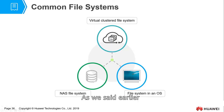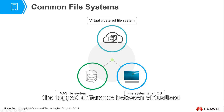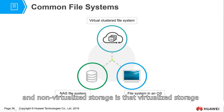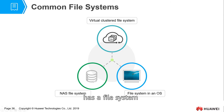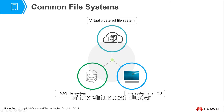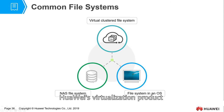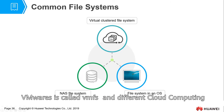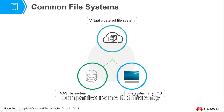The biggest difference between virtualized and non-virtualized storage is that virtualized storage has a file system while non-virtualized storage does not. The file system here refers to the file system of the virtualized cluster. For example, Huawei's virtualization product has a file system called VRMS. VMware is called VMFS. Different cloud computing companies name it differently.